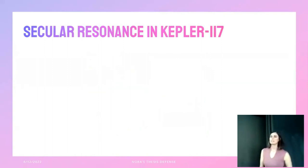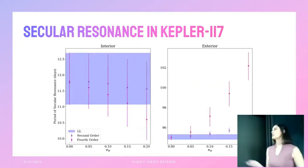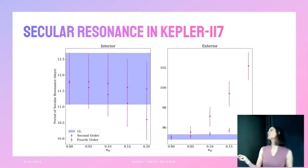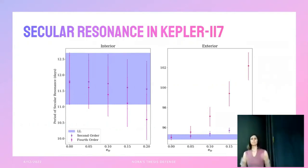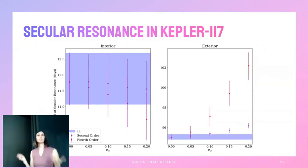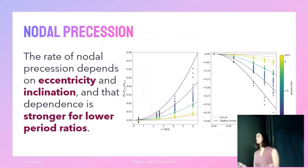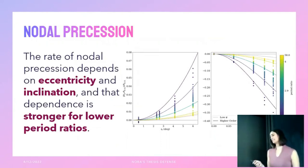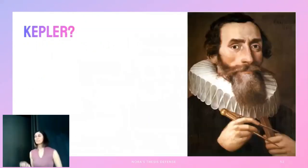I applied this to a real system with known planets to see how the location of the secular resonance for a test particle changes depending on the test particle's eccentricity. Laplace-Lagrange shows no eccentricity dependence, so its location is constant. For the interior resonance, observational uncertainties dominate so the difference isn't noticeable. But for the exterior resonance, including higher-order terms significantly changes the resonance location — demonstrating that you need those terms to capture that eccentricity dependence.